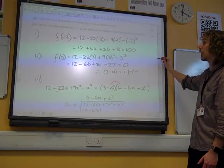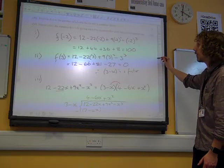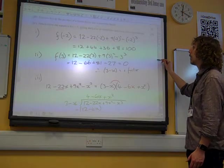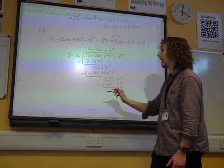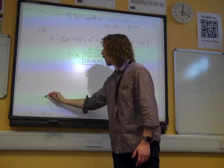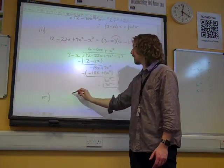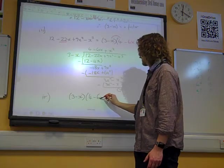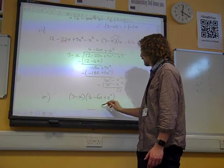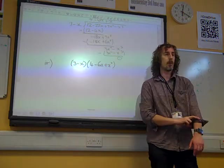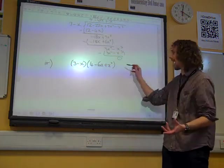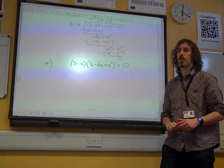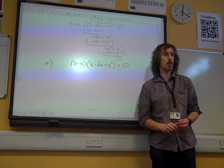Then it said, hence solve the equation, giving each root in simplified surd form where appropriate. And quite a few people lost one mark unnecessarily here. What we've ended up with is 3 minus x times 4 minus 6x plus x squared.